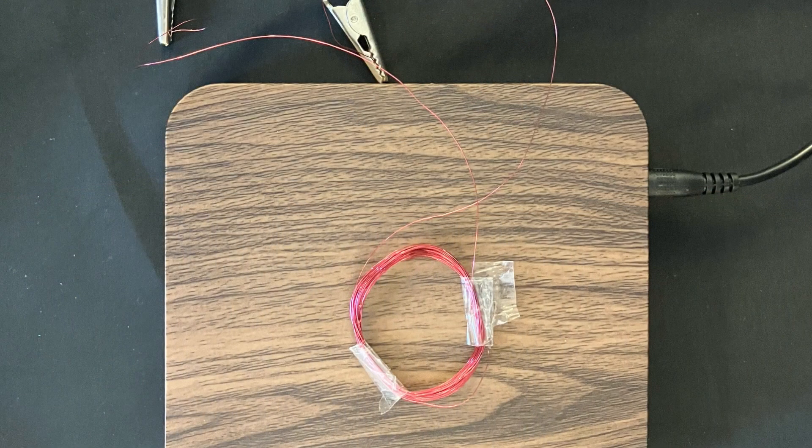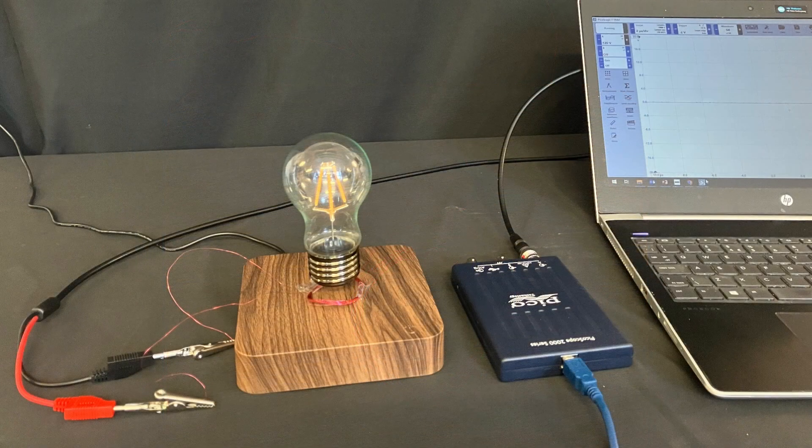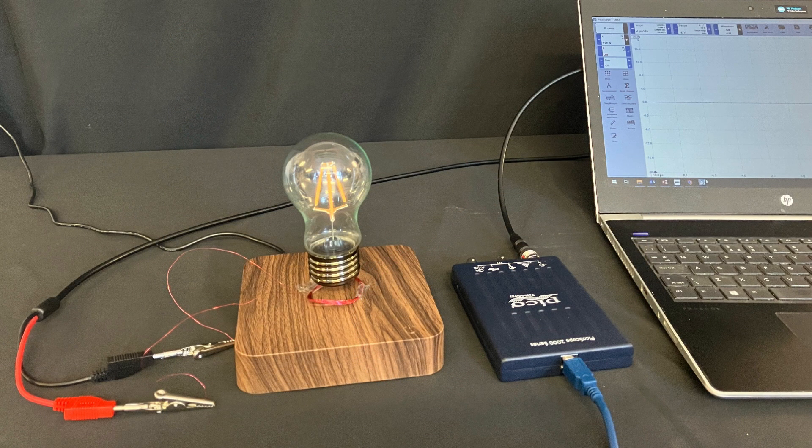So we've explained how it levitates, but how does it light up? To investigate this, I've put a coil of copper wire on the base, it's about 20 turns of enameled copper wire, and I've connected that to a USB oscilloscope, which makes my computer an oscilloscope.